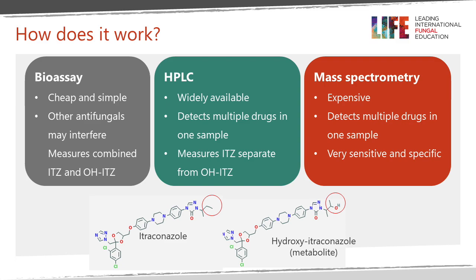Mass spectrometry is a more expensive machine and therefore a slightly more expensive method overall, but it can also detect multiple drugs in a single sample and is very sensitive and specific. It is the method of choice if there are a large number of samples. The preparation for mass spec is also simpler than for HPLC.